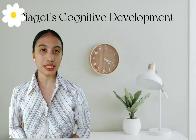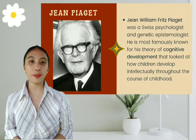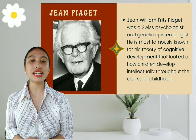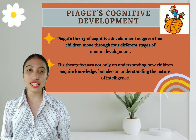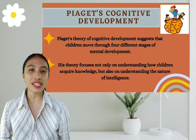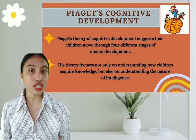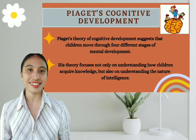Starting off with the first psychological basis, which is Piaget's Cognitive Development. Jean William Fritz Piaget was a Swiss psychologist and genetic epistemologist, most famously known for his theory of cognitive development that looked at how children develop intellectually throughout childhood. His theory focuses not only on understanding how children acquire knowledge, but also on understanding the nature of intelligence.